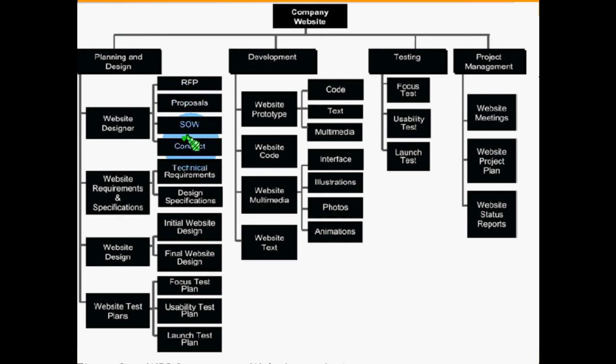One important point to notice is that the items in a WBS are not in any logical sequence. For example, the statement of work should come before the request for proposal, but here it appears later. This is deliberate — a WBS does not show any sequence of work. It just gives you the breakdown of work; it does not give you any sequence.